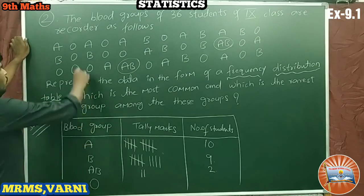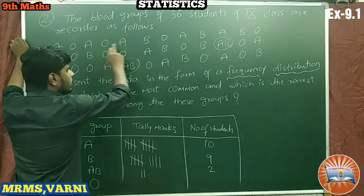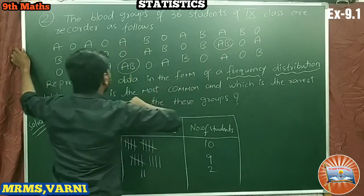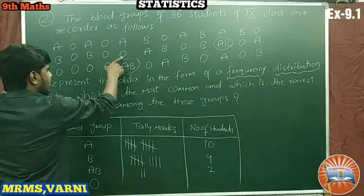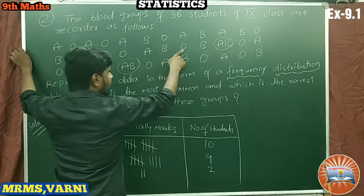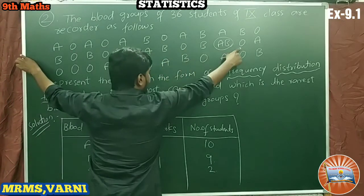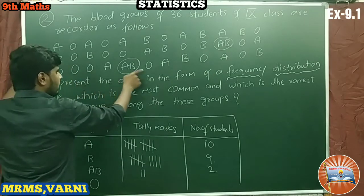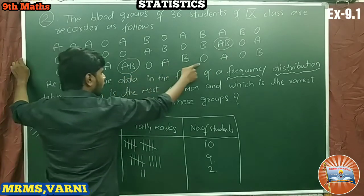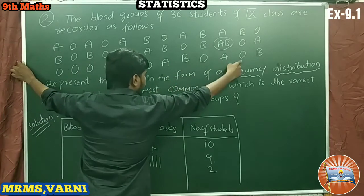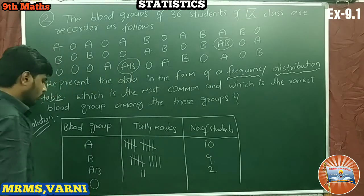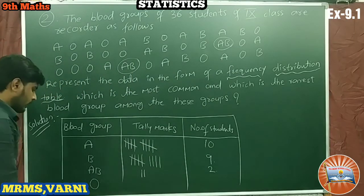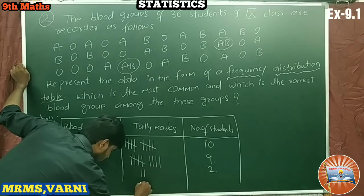For blood group AB, counting: 1, 2, 3, 4, 5, 6, 7, 8. Then for blood group O: continuing the count up to 15. So blood group O has 15 students.